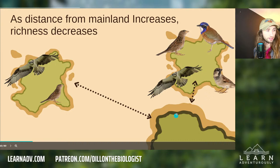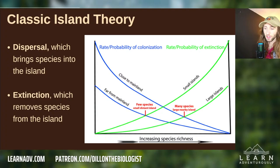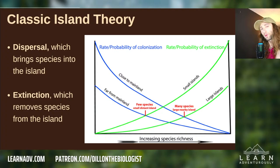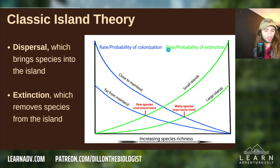The island closer to the mainland has more species than an equivalent-sized island that is farther away. All of this material will be put up as a recap on the website with handouts that break down these concepts. When we're talking about island theory, we're going to focus on two fundamental forces: dispersal and extinction, and relate those back to area and distance from mainland.